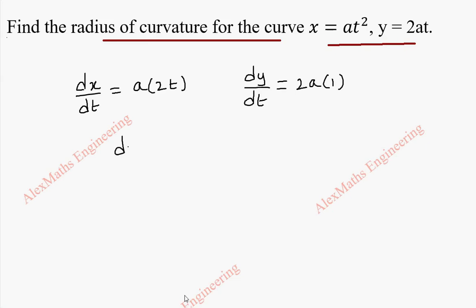So by dividing this, we get dy/dx. That is dy/dt by dx/dt. So this will be 2a by a into 2t. It cancelled 2a. So we are left with 1/t.